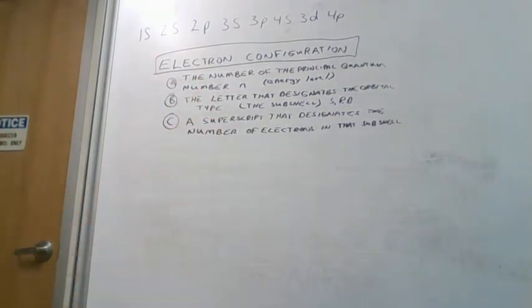And so what electron configuration does is it tells us a couple things. It tells us the energy level of the orbitals, what type of orbital they're in, if they're in an s, p, or d orbital, and then how many electrons are in that orbital.